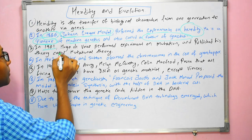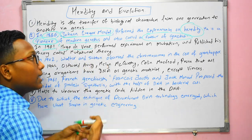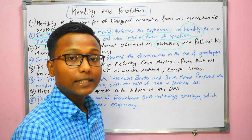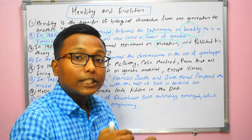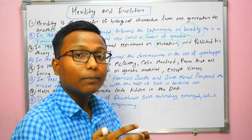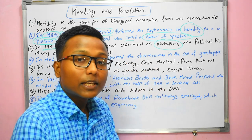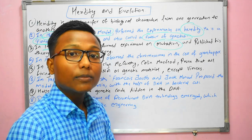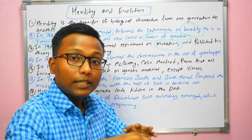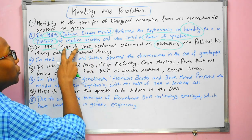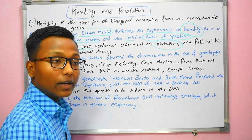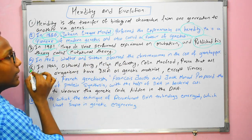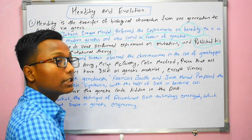In 1901, a second experiment was performed by Hugo de Vries, related to mutation. Mutation means that when changes occur in the proper structure of DNA and these changes cause some effect, those changes are called mutations. Hugo de Vries published a theory called the Mutation Theory.